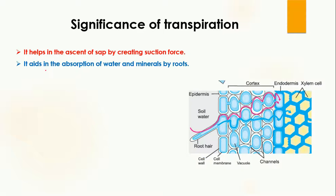The second significance of transpiration is that it aids in the absorption of water and minerals by the roots. When water moves out of the leaf, it causes a decrease in water potential. To overcome that, water moves from the root and enters into the xylem cells. So transpiration is helpful in the absorption of water from the roots and from the soil.